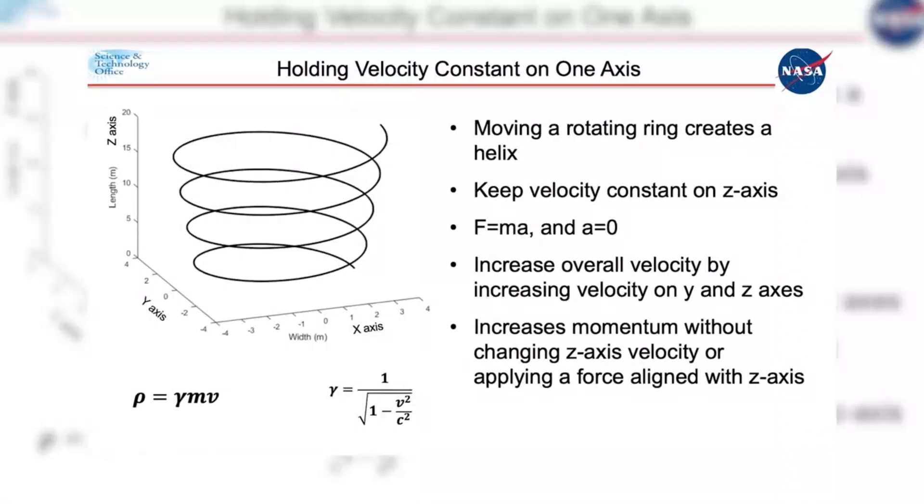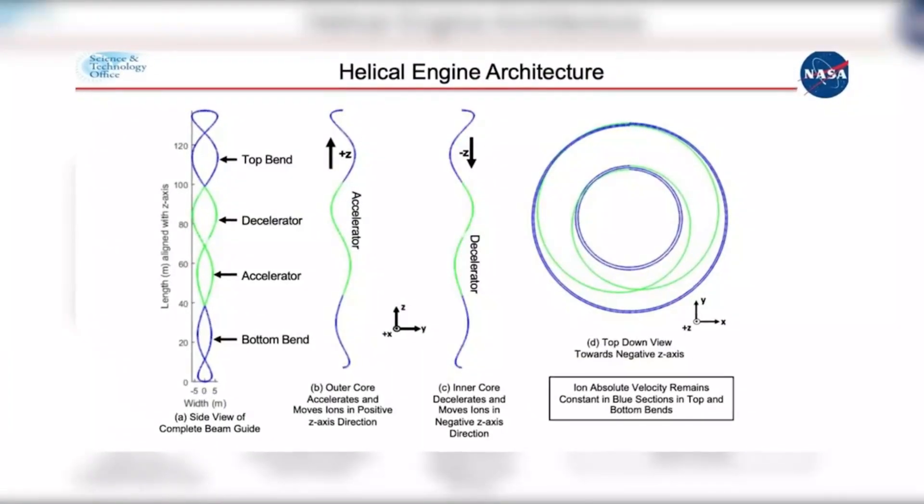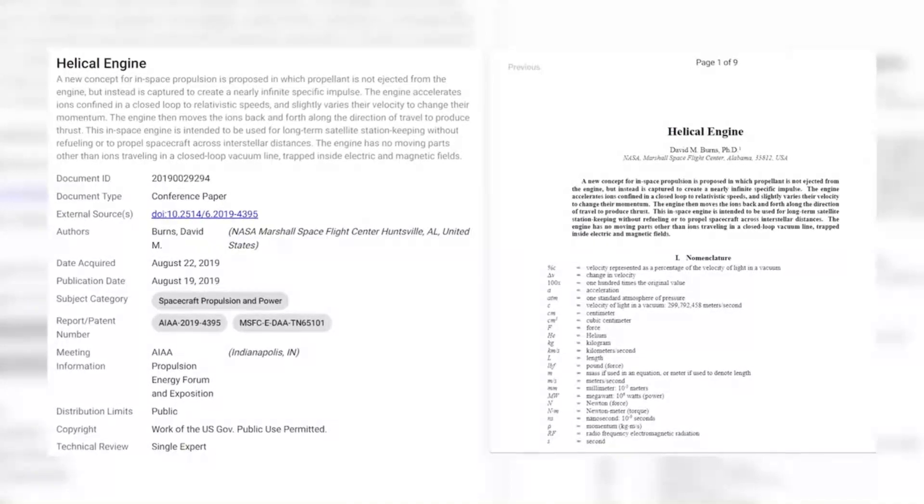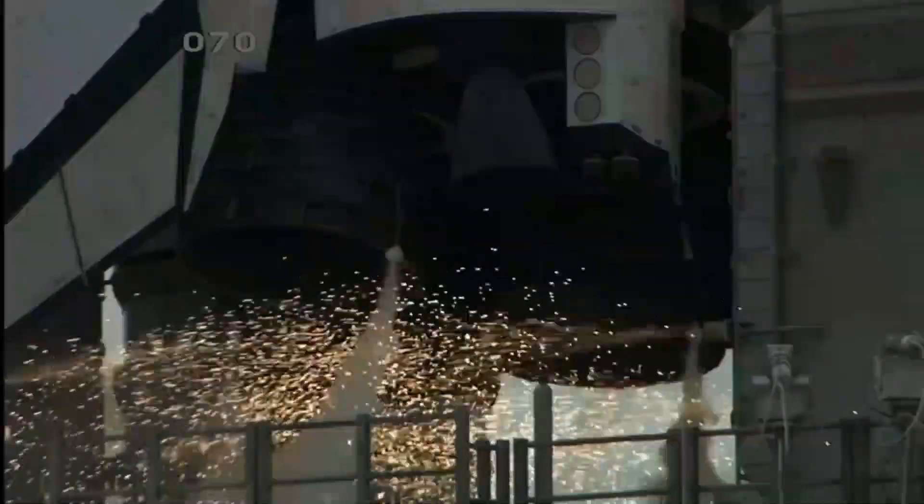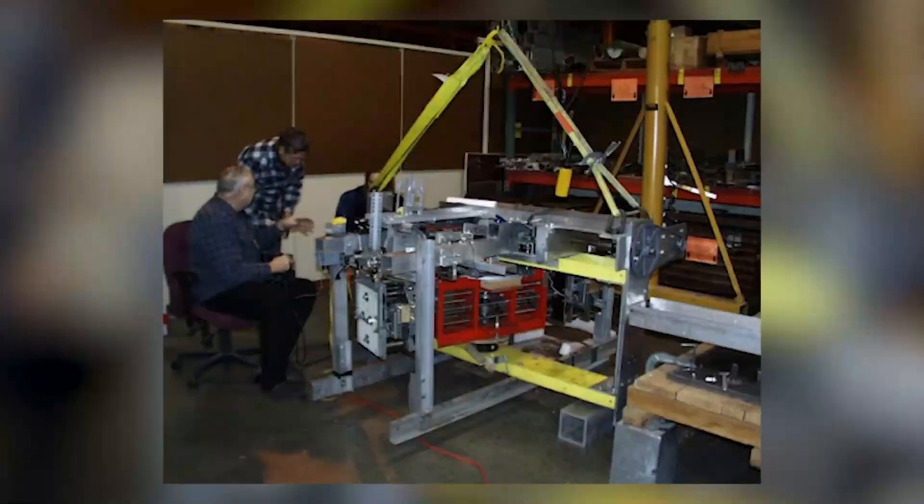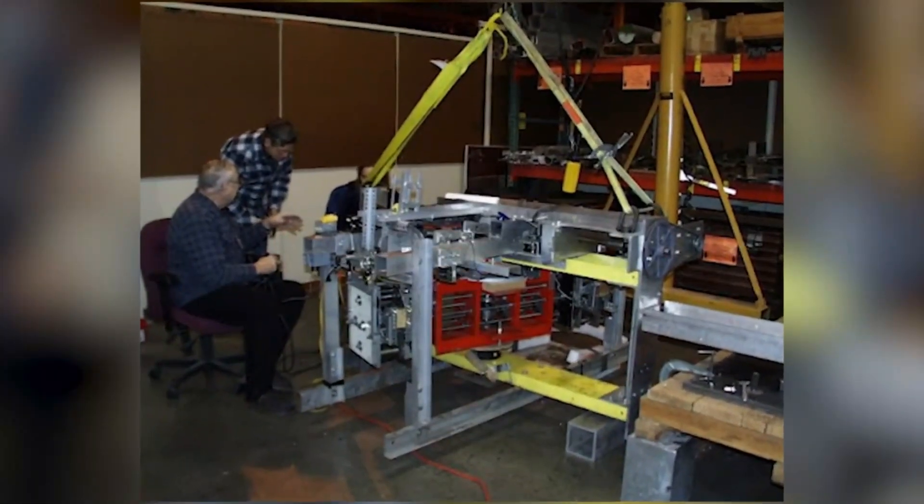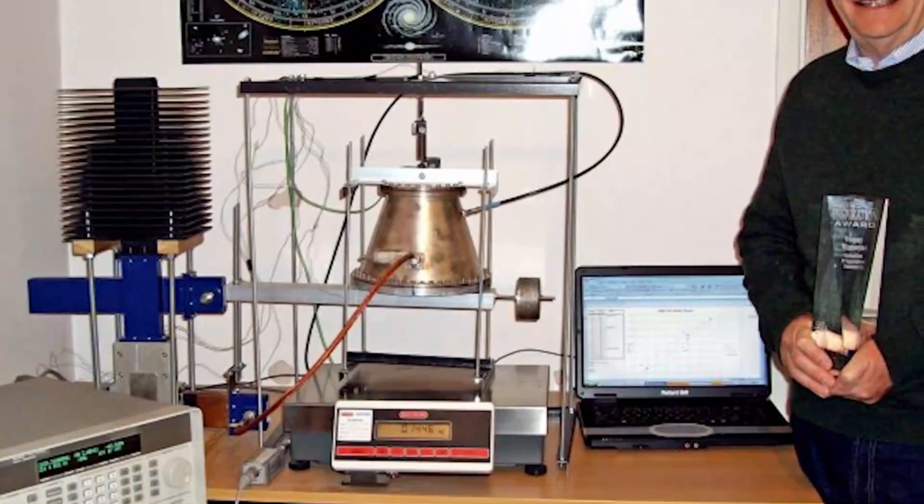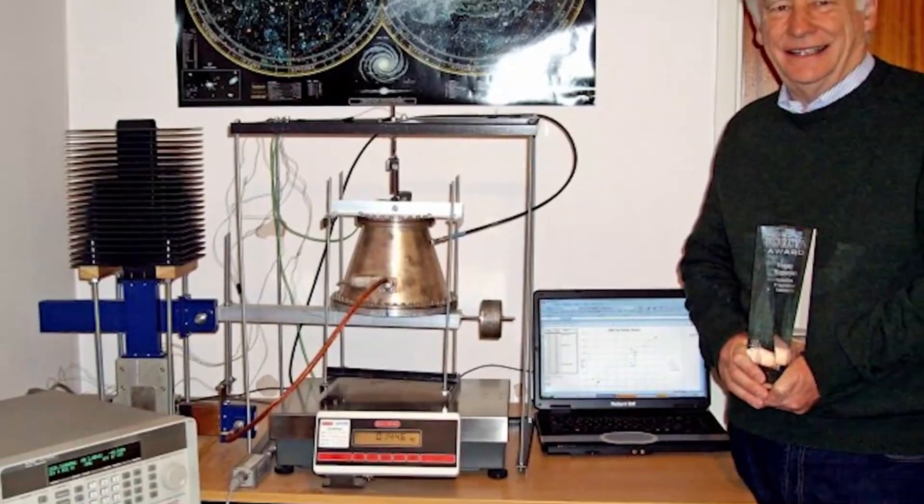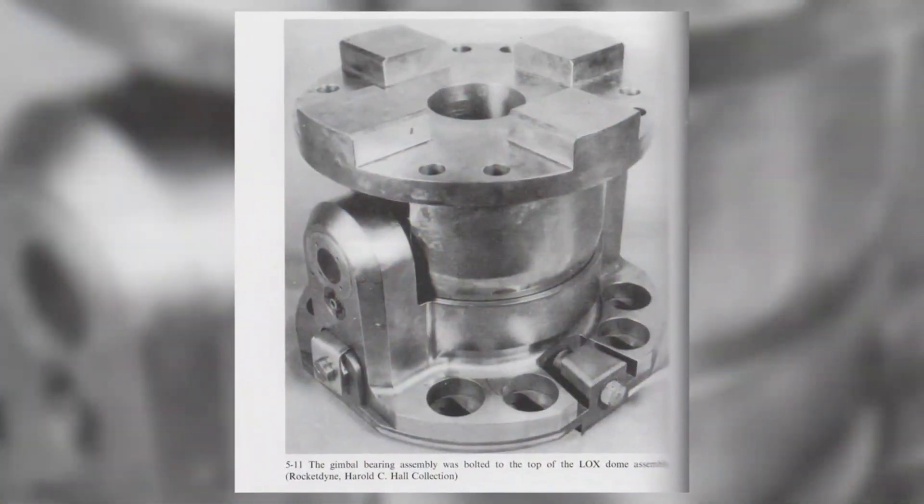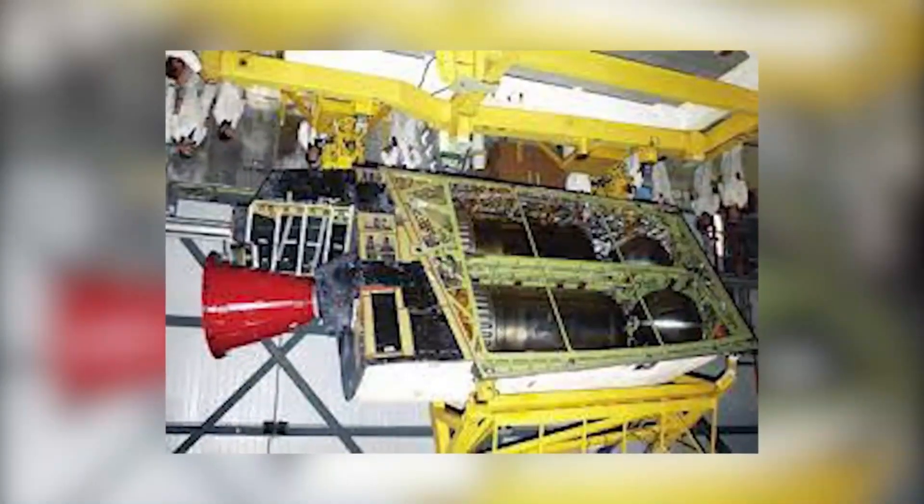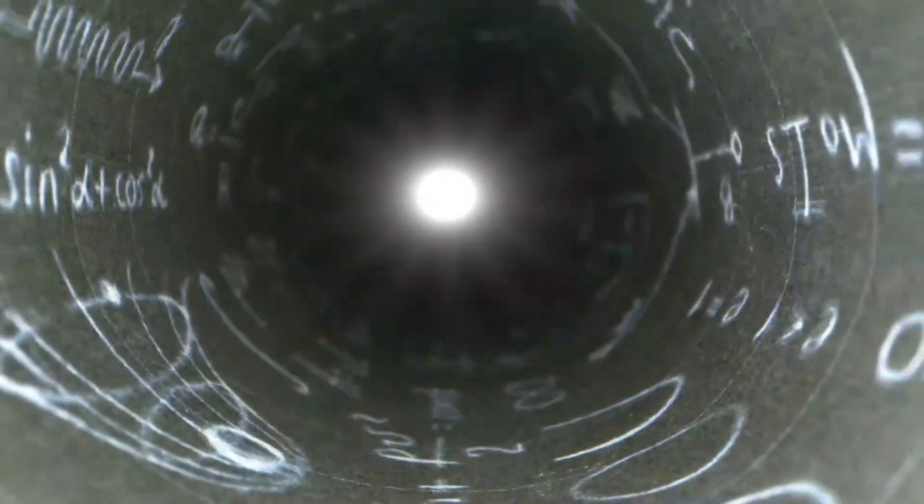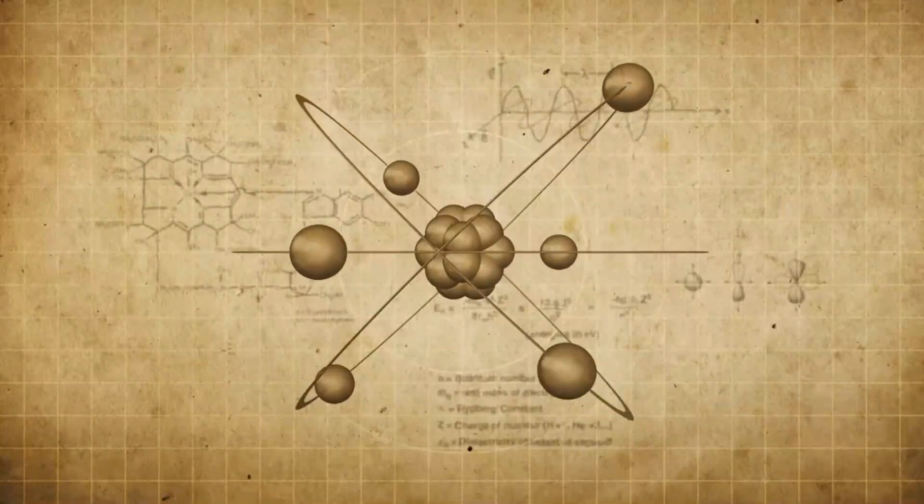However, proposals for propulsion-free vehicles, such as the helical engine, are not entirely new. In the late 1970s, a US inventor named Robert Cook invented an engine that reportedly converted centrifugal energy into linear motion. Then, in the early 2000s, a British inventor named Roger Scheuer proposed the EM drive, suggesting that trapped microwaves could be transformed into thrust. Neither idea has been proven, and both are widely believed to be impossible due to a violation of a fundamental physical law, the conservation of momentum.